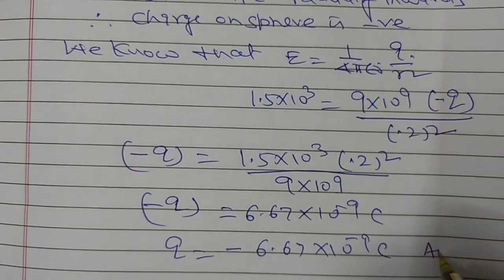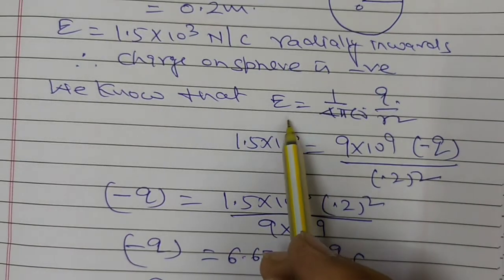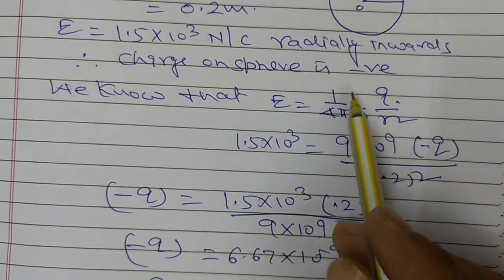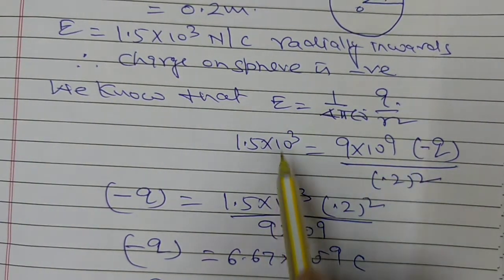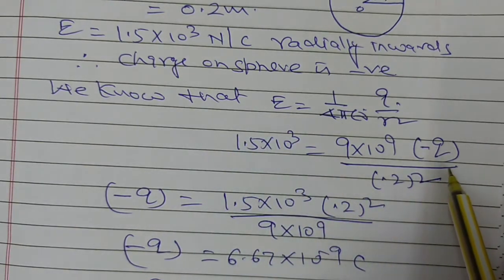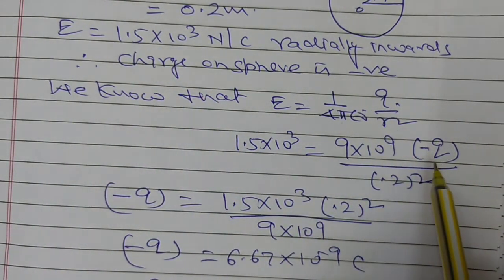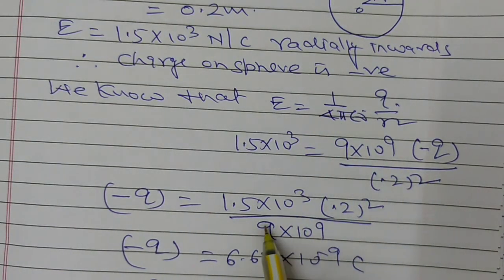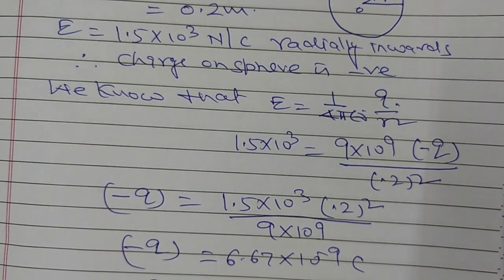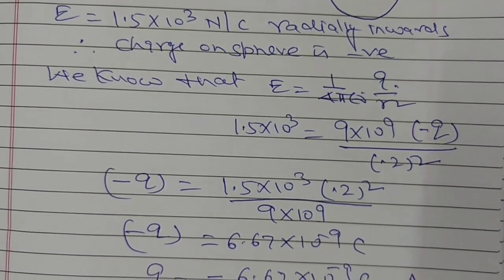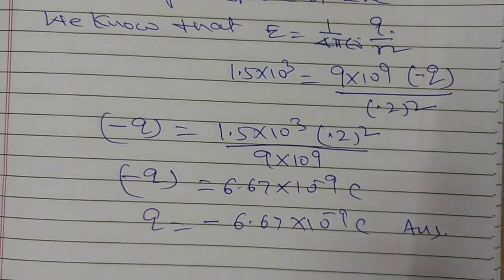This is the answer to this problem. The electric field formula used is 1 upon 4 pi epsilon 0, Q upon distance square. On putting the values with Q as minus Q upon distance square, and on solving, Q is equal to minus 6.67 into 10 to the power minus 9 Coulomb. This is the answer. Thank you.